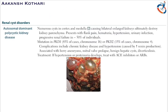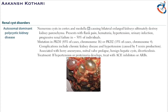In autosomal dominant polycystic kidney disease, multiple cysts form in the cortex and the medulla. As visible in the image, cysts are present throughout the cortex and medulla, causing enlarged kidneys. It occurs in both kidneys — hence it is a bilateral enlarged kidneys condition. These cysts destroy the parenchyma of the kidney.